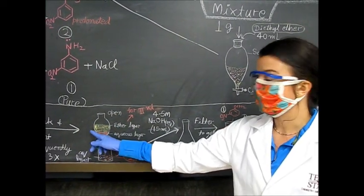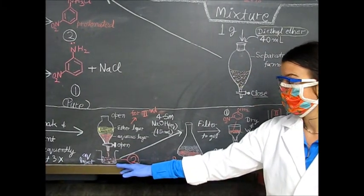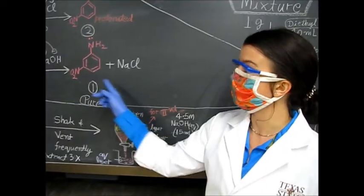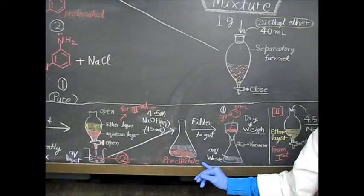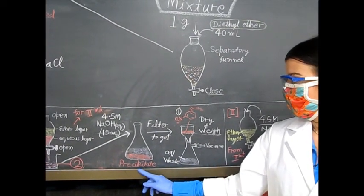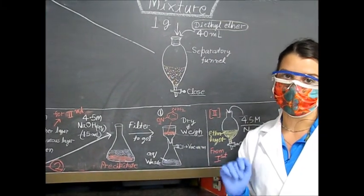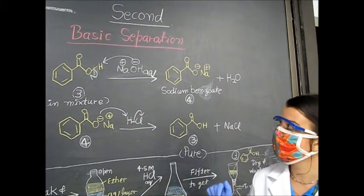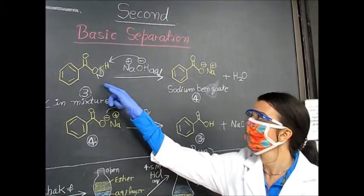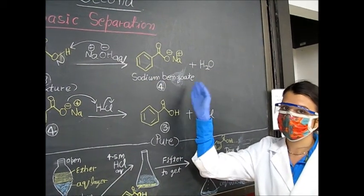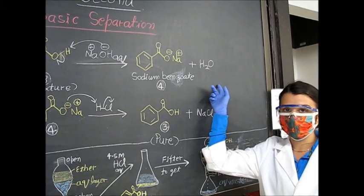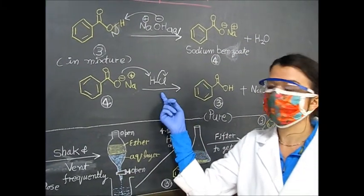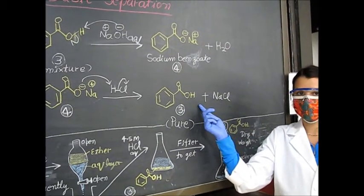The separatory funnel contains our ether layer, which is our organic layer. After taking the aqueous layer and adding 15 milliliters of 4.5 molar NaOH, which returns it back to the pure form that is not soluble in water, we will see a precipitate form at the bottom of the flask. This precipitate we will filter using vacuum filtration, then weigh and dry it. In the basic separation, we will be adding sodium hydroxide to benzoic acid to deprotonate it, leading to sodium benzoate, which is the salt. Sodium benzoate is soluble in water, creating our aqueous layer that we can later separate out.